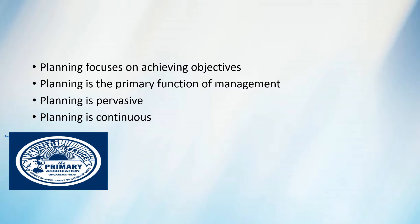When we studied the functions of management in the first chapter, we learned that there are basically five functions: planning, organizing, staffing, directing, and controlling. All other functions come after planning, which is why it is the primary function of management.